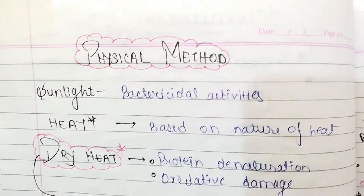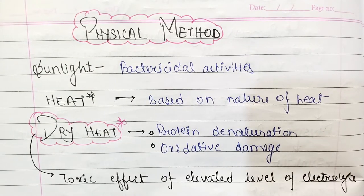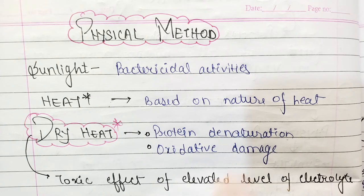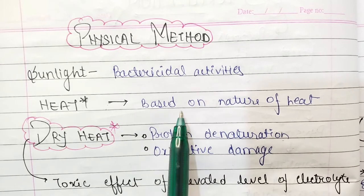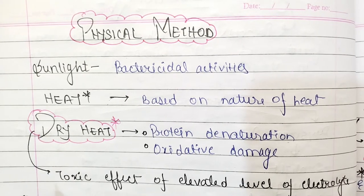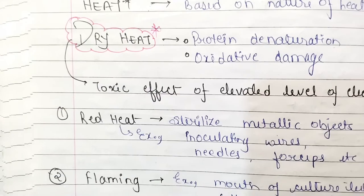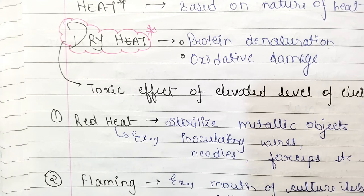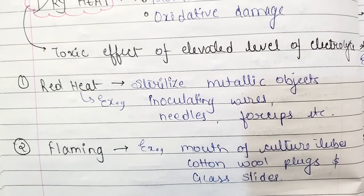Coming to physical methods, first is sunlight - sunlight affects bacterial activity. Heat-based methods depend on the nature of heat: dry heat or moist heat. In dry heat, protein denaturation will occur, along with oxidative damage and toxic effects from elevated levels of electrolytes.